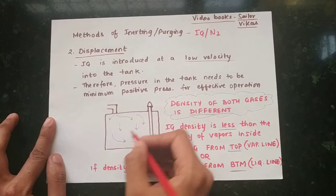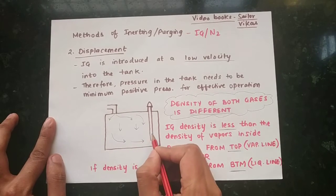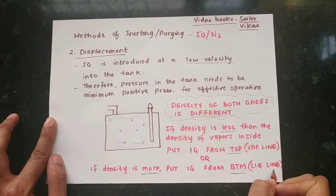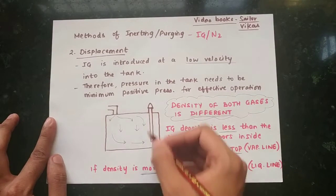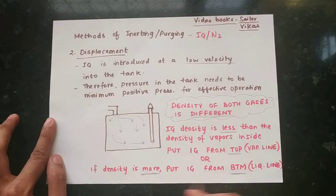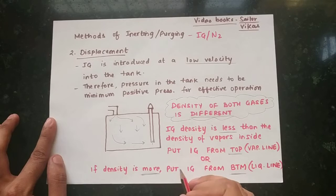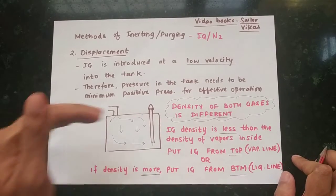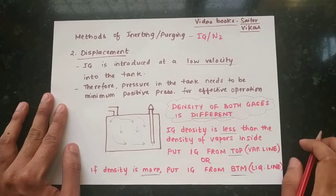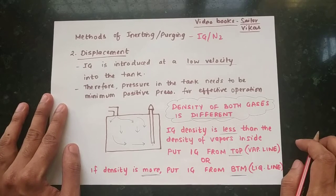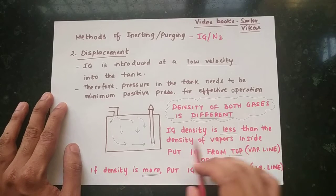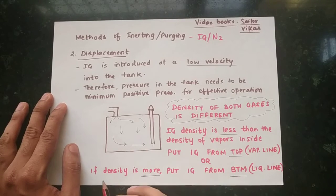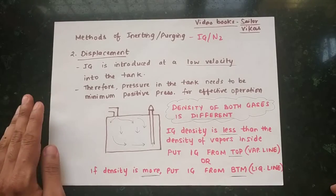Since the hydrocarbon is heavier, it will be eliminated from the bottom side — for example, through the liquid line as shown — which is why we use the PV valve. Conversely, if the IG is heavier, you put the IG from the bottom and replace the lighter gas from the top. In short: when IG density is less than the vapor density inside, put IG from the top; if IG density is more, put IG from the bottom.